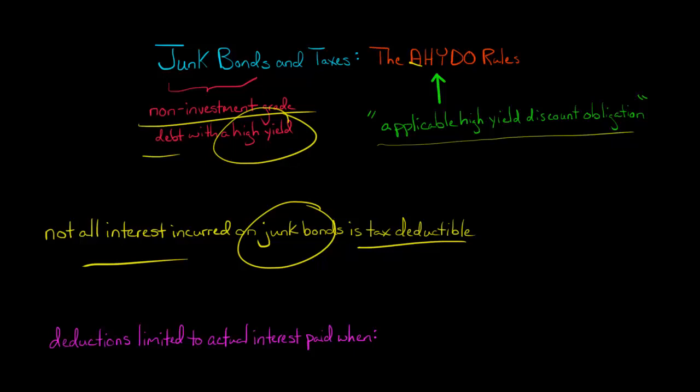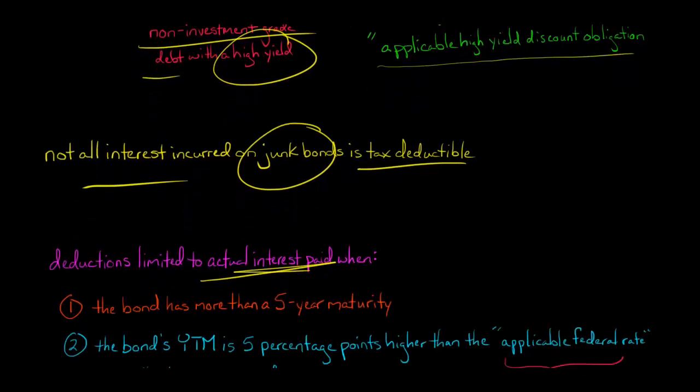There are limitations, and in some cases, if you have a junk bond, the company that issued it can only deduct the actual interest paid out. It can't just accrue interest and take a tax deduction. I'm going to talk about when there are the limitations.